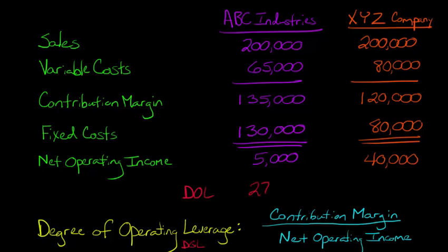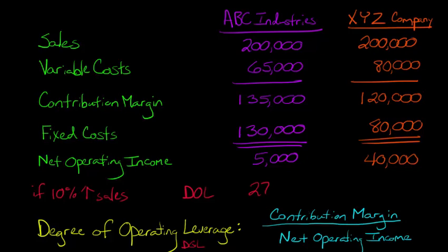So what does that mean? We had talked about a 10% increase in sales. It tells us we take that 27 and multiply it by that 10%. So it's telling us that there would be a 270% increase in profits — operating income would go up 270% if there was an increase of 10% in sales for ABC Industries.